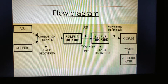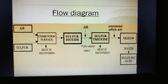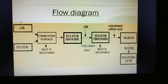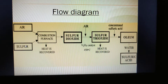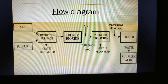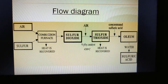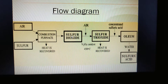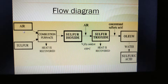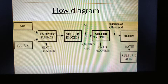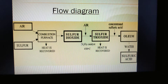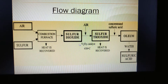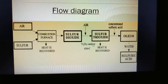Here we have a flow diagram. See my cursor — you can see it properly. Air (oxygen) reacts with sulfur in the combustion furnace to produce sulfur dioxide SO2. This sulfur dioxide SO2 then reacts with air (oxygen) in the presence of V2O5, Vanadium Pentoxide catalyst.